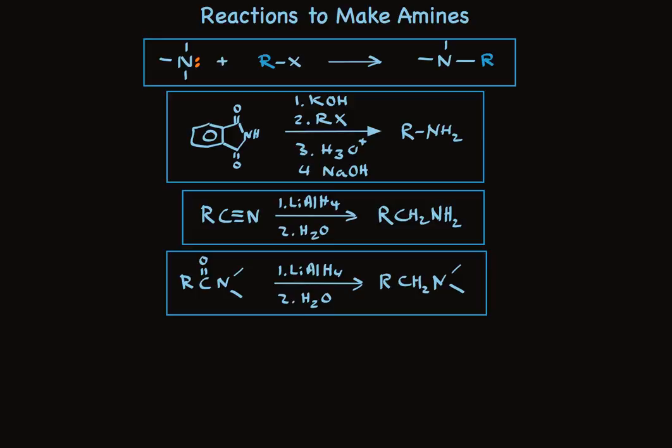You can use the same reducing agent to reduce amides. In this case, it isn't necessarily a primary amine. You could be making a secondary or tertiary amine as well, and like above, you end up with a CH2 group there from reduction of the carbonyl.